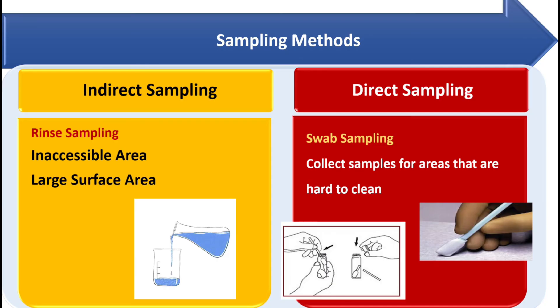There are two types of sampling methods: indirect sampling, also called rinse sampling, and direct sampling, also called swab sampling. In swab sampling, a small area of cleaned equipment is swabbed, the swab is extracted and added to a diluting solvent, and then the extract is examined by a suitable analytical method. In rinse sampling, residue is collected from the overall equipment — not restricted to any particular location. Equipment is cleaned by several washing cycles using water for injection or purified water, and then the rinse sample is analyzed.